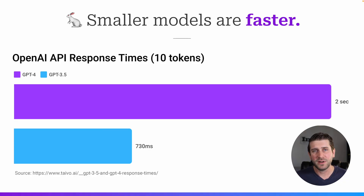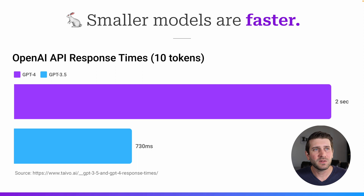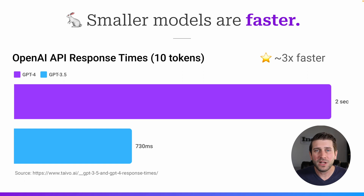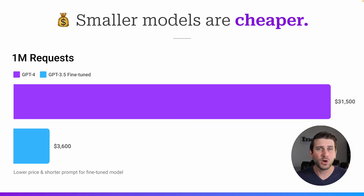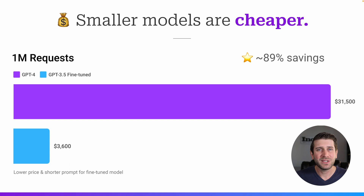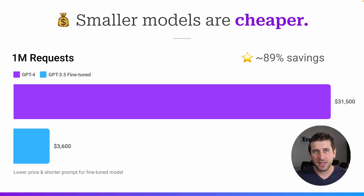In terms of speed, fine-tuning can make a huge difference. Even if you just jump down from GPT-4 to GPT-3.5 Turbo, the response times for 3.5 Turbo are almost three times faster than GPT-4 — and for a lot of user experiences, that's going to make a really big difference. Smaller models are also much cheaper, so making that same leap down and fine-tuning it, we can save almost 90% in terms of cost. This adds up so much, especially if you have a large volume of requests.